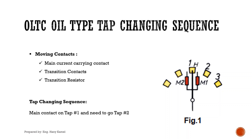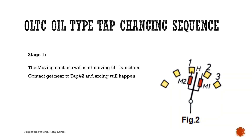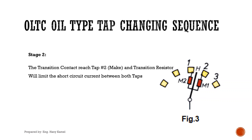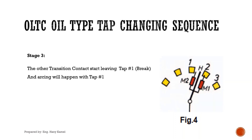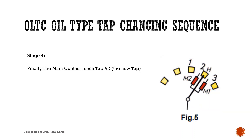Now we will take an example of how tap changing happens — the sequence of operation for the moving contacts. The tap is number 1 and we need to shift the moving contact to tap number 2. Stage 1: the moving contacts start moving until the transition contact gets near tap number 2; arcing will happen between them. Stage 2: the transition contact reaches tap number 2 — make — and the transition resistor limits the short circuit current between both taps. Stage 3: the other transition contact starts leaving tap number 1 — break — and arcing will happen with tap number 1. Stage 4: finally, the main contact reaches tap number 2.